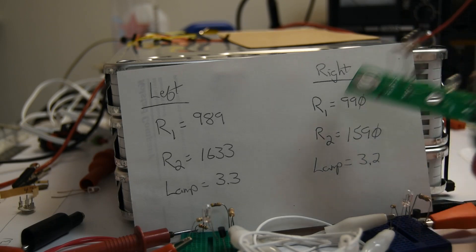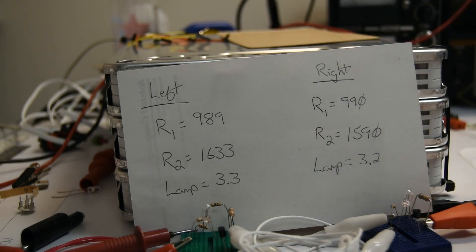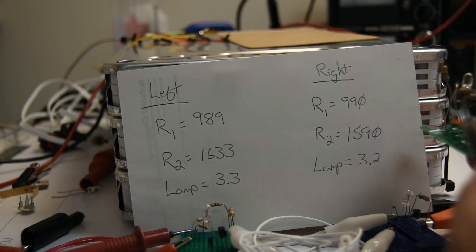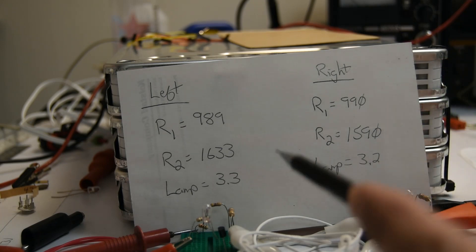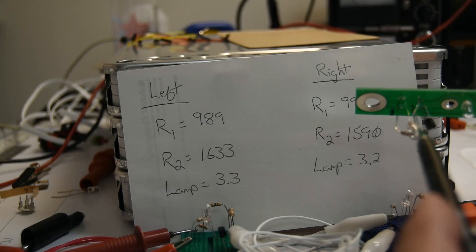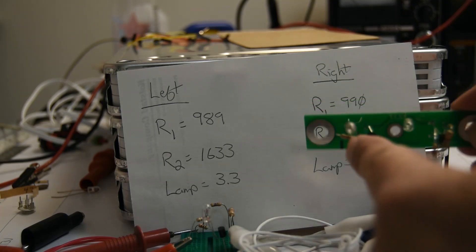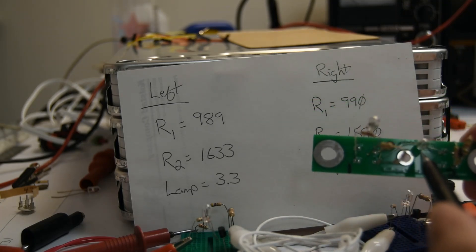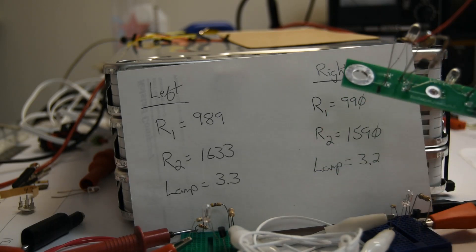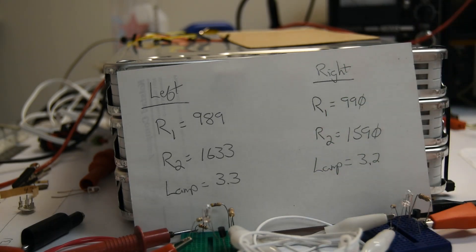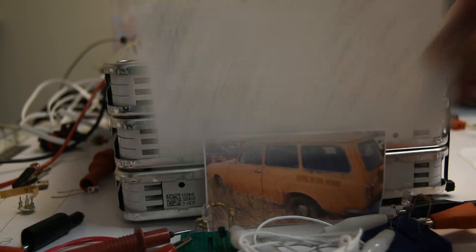1633 on the left-hand side, which is number one, and 1590 ohms. I did a little bit neater job on the second side. You can see I got a little more clever in my arrangement here. And then the lamps here, the lamp is 3.3 ohms on one side and 3.2 on the other. So very similar.